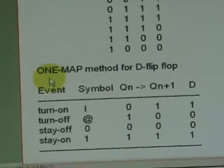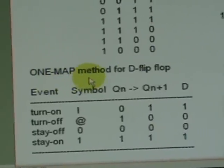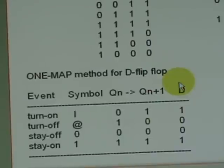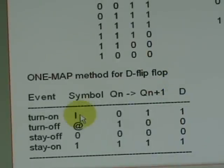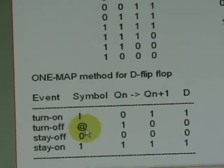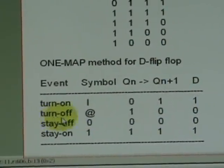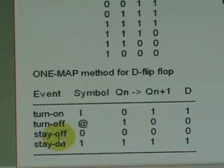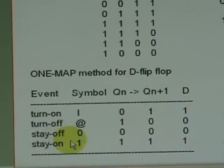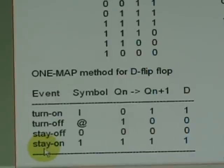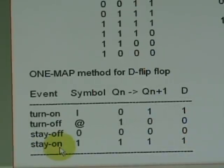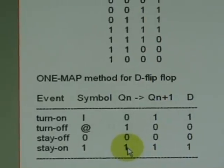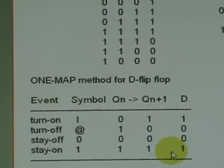First, we develop a one-map method for the D flip-flop. We introduce four symbols: capital I for turning on, a dash sign if the flip-flop turns off, zero if it stays off after clocking, and one if it remains on or stays on after clocking. Present is one, clocking it remains one.